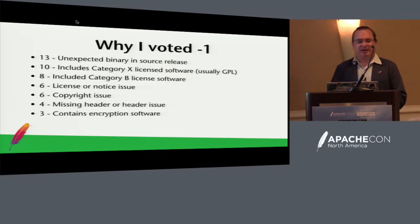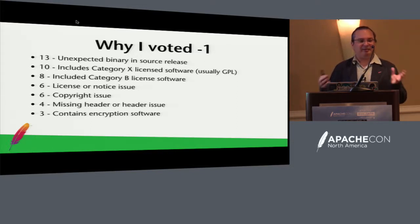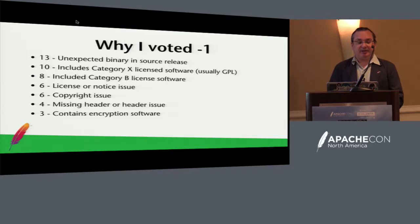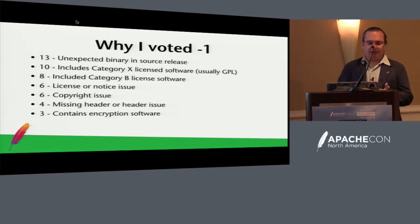Here's why I voted minus one. Number one reason is binaries in source code. The Apache Foundation makes source code; we need source releases to not have compiled code in them. That's the most common issue. Licenses are classified by Category A, Category B, and Category X. Category A licenses are compatible with the Apache license. Category B ones you can include in binary distributions generally. Category X means you can't include them or depend on them — GPL and LGPL are Category X. On ten occasions I've had to vote minus one for this.